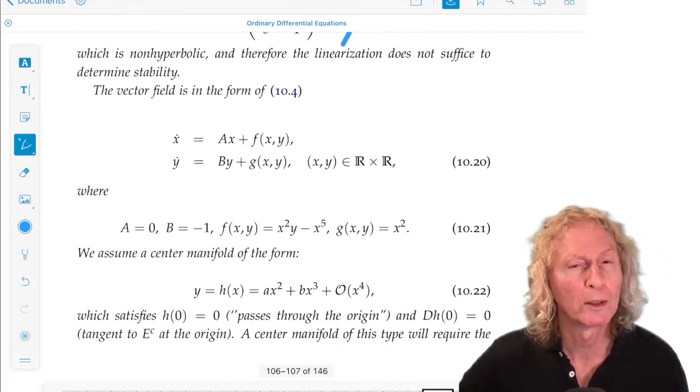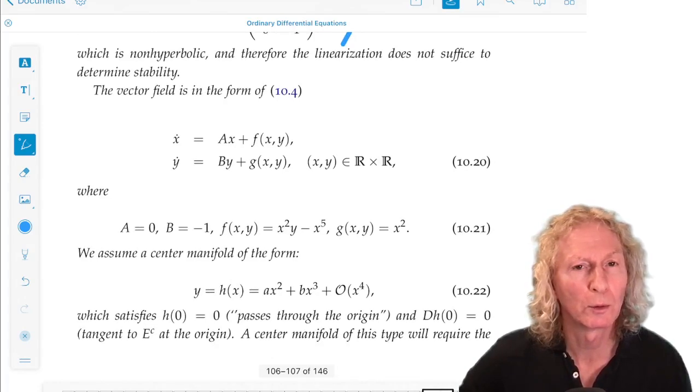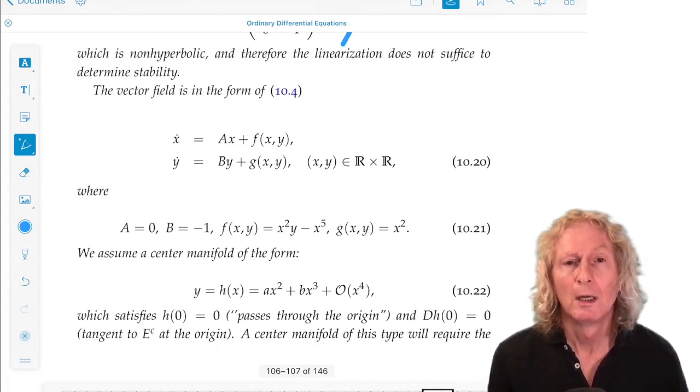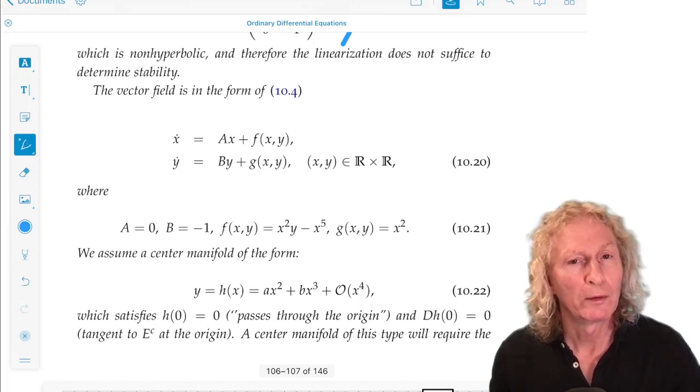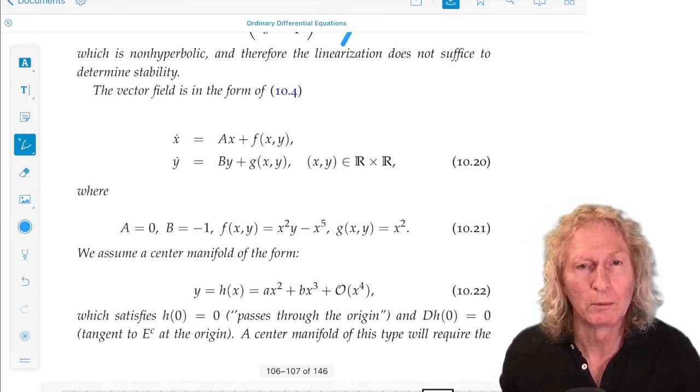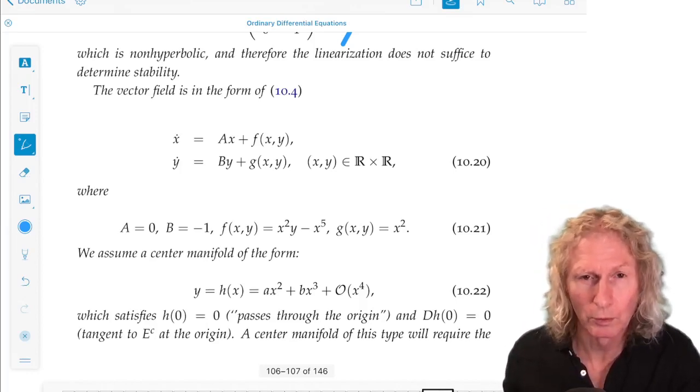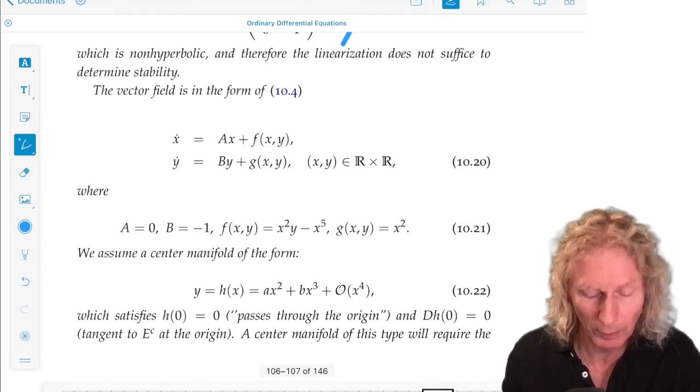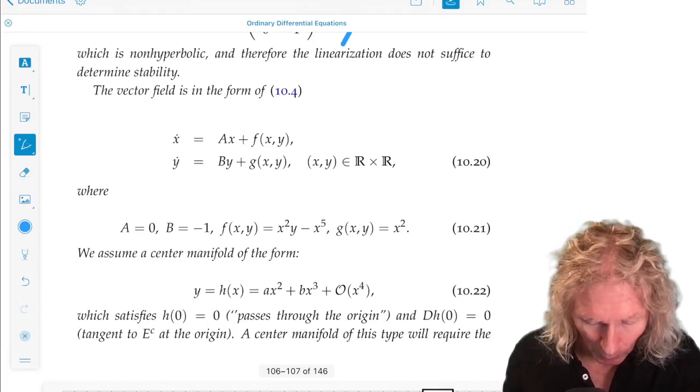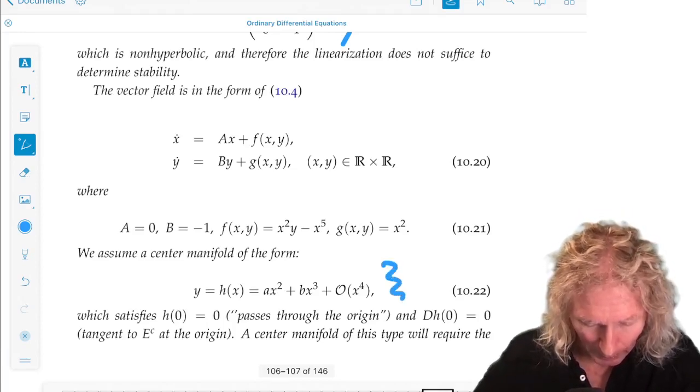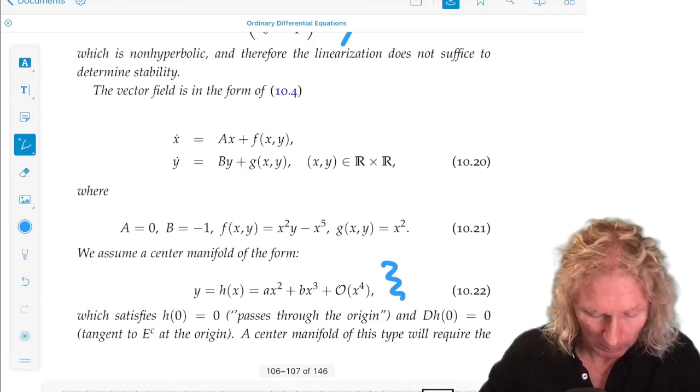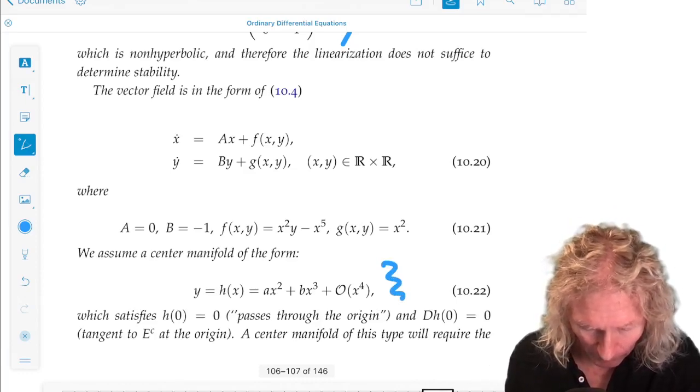So, we know we have a one-dimensional center manifold and a one-dimensional stable manifold. We're going to seek an approximate solution to the center manifold according to the equation and the theorem that I developed last time. We're going to assume a center manifold that's the form of a polynomial, and it's of this form.